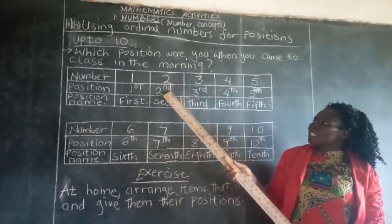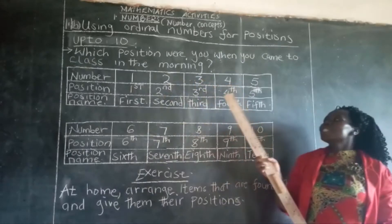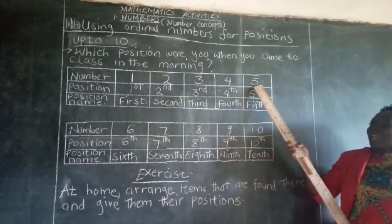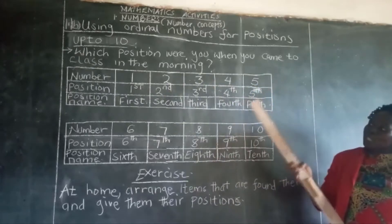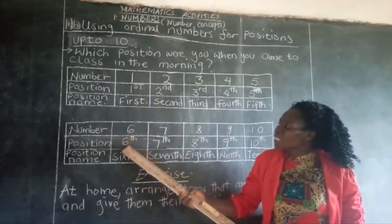Number two is in the second position. Number three is in the third position. Number four is in the fourth position.